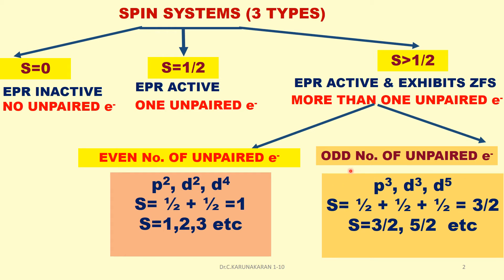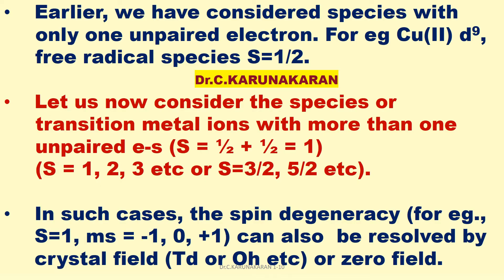For transition metal complexes with odd number of unpaired electrons, S equals 1/2 plus 1/2 plus 1/2 equals 3/2. For Mn2+ with 5 unpaired electrons (each D orbital contains one unpaired electron), S equals 5/2. So S can be 3/2, 5/2, 7/2, etc.